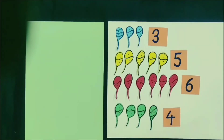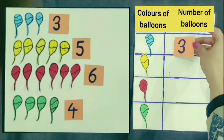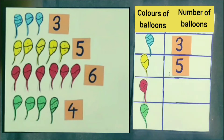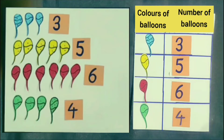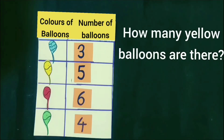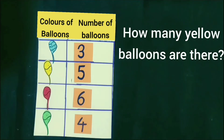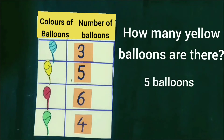Let's make a chart of the different colors of balloons. Now, tell how many yellow balloons are there. Look at the chart. There are five balloons of yellow color. So, the answer of this question is five balloons.